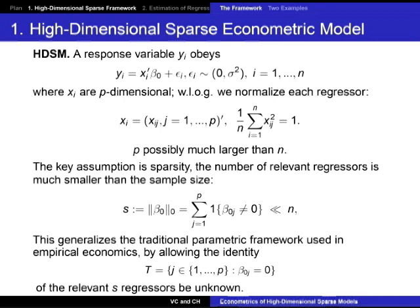This generalizes the traditional parametric framework used in empirical economics by allowing the identity of the most relevant regressors to be unknown. We don't know this identity, and we're going to try to figure it out at least approximately. We're not going to be able to perfectly figure it out using modern model selection methods, but we will try to find these relevant regressors at least approximately.